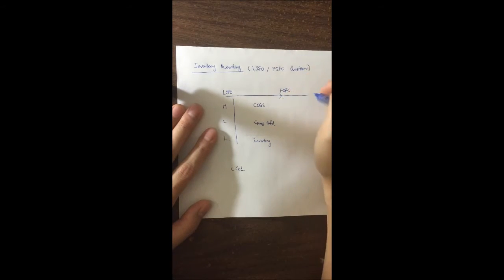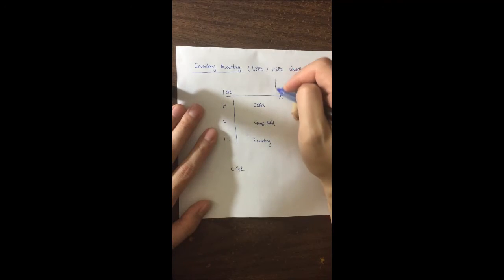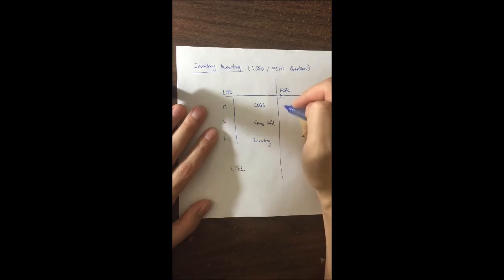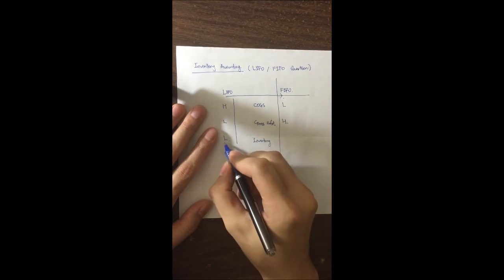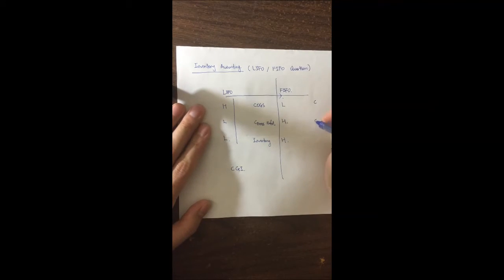Everything here is symmetrical, like a mirror image. So under LIFO the pattern is H, L, L — meaning cost of goods sold is High, gross profit is Low, and inventory is Low. On the FIFO side, it's the mirror: L, H, H. You just fill in C, G, and I on each side.